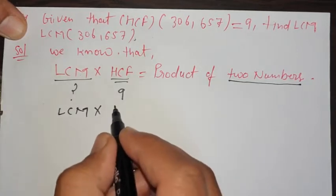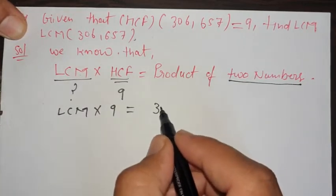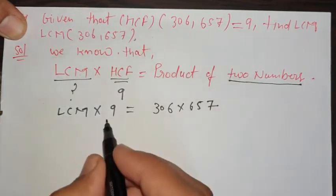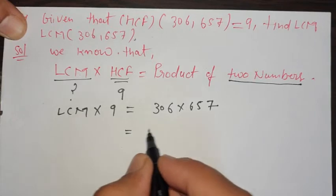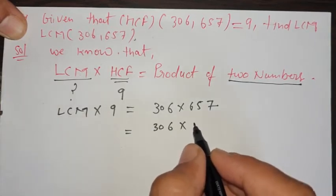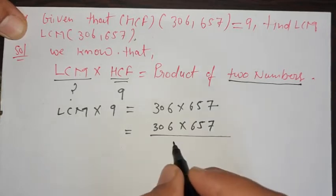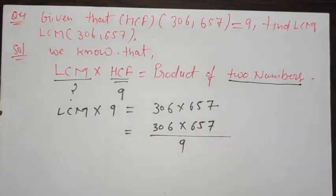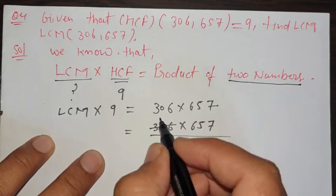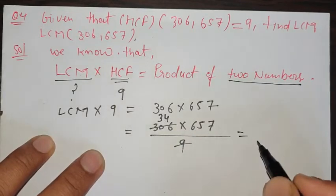LCM × 9 = 306 × 657. Divide both sides by 9. The 9 will cancel, giving us the LCM directly.